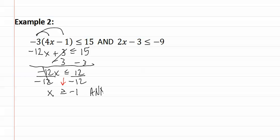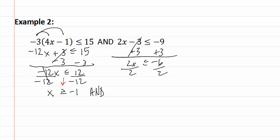This is an 'and' statement. We continue by solving the second inequality by adding three to each side, giving us two x is less than or equal to negative six. Dividing each side by two gives us x is less than or equal to negative three.